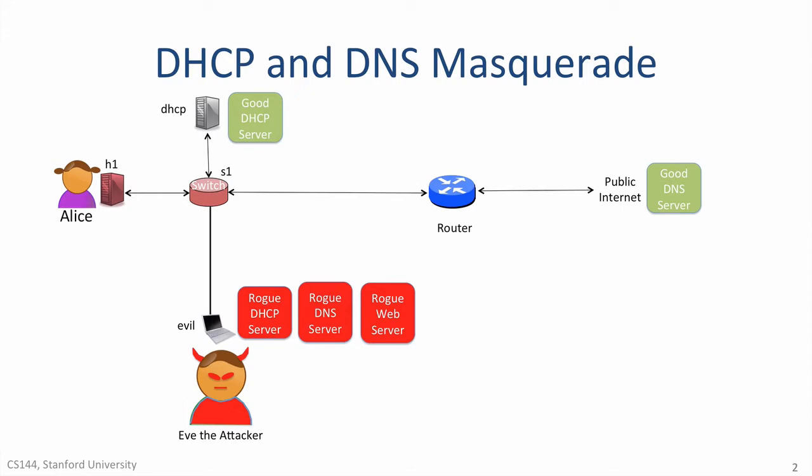The demonstration shows how simple a DHCP attack is if the attacker has access to the local network and can install a rogue DHCP client close to the victim. The demo runs in the Mininet emulation system, which means you can easily and safely run it yourself on your own computer, and the same code can easily be replicated into a real network. This demo was created by Bob Lance at the Open Networking Lab in Palo Alto.